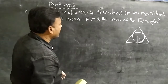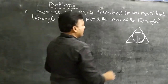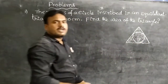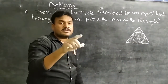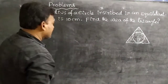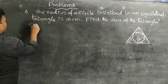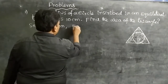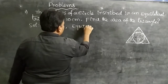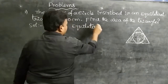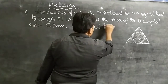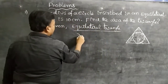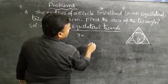Find the area of the equilateral triangle. The area of an equilateral triangle equals (√3/4)a², where a is the side. For the incircle: r = a / (2√3). Substituting r = 10 centimeters: 10 = a / (2√3).